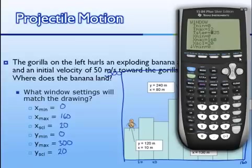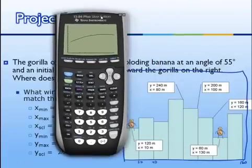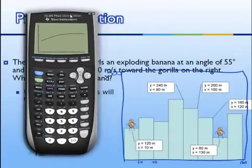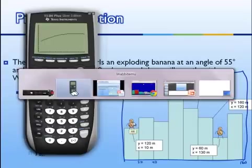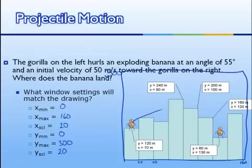If we hit graph, we can see the shot. Transferring that picture onto the graph, it looks like the banana is going to go through a building and miss the gorilla. Now, it would be really cool if we could put those buildings onto our calculator — and it's not so hard. Those buildings look very much like a bar graph, and our calculators can create bar graphs.